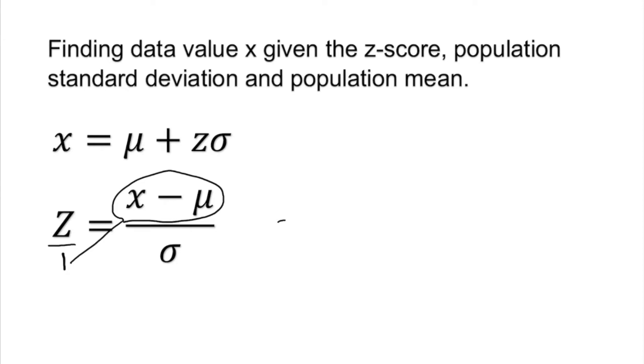X minus the population mean equals z times sigma. Obviously, I need to isolate the x by itself because this is what I'm looking for, the x value data point. So I'm going to add the mean to both sides.